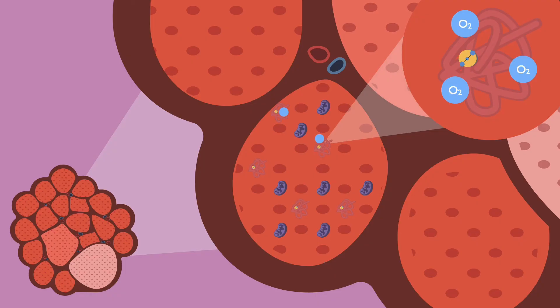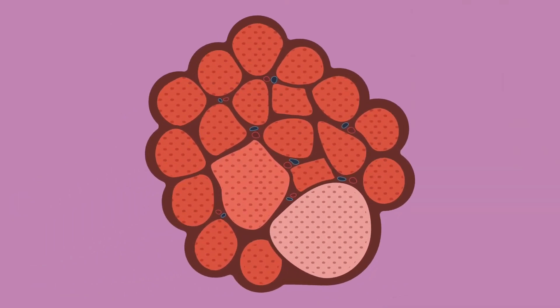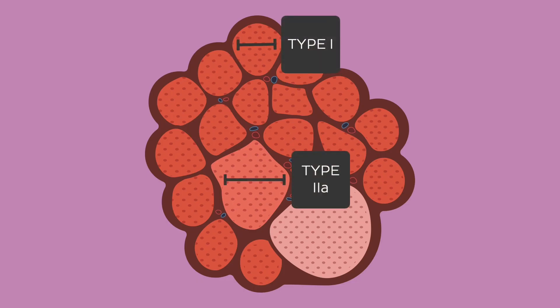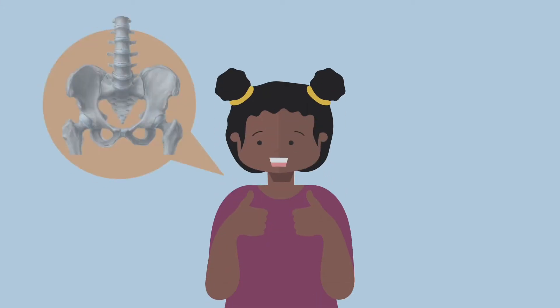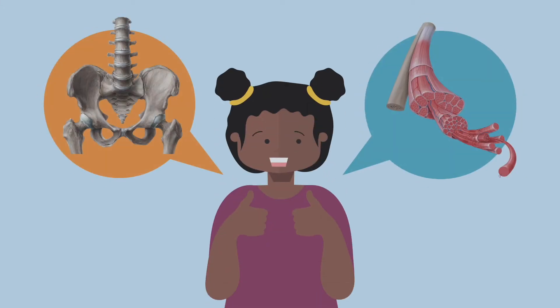All that myoglobin gives these fibre types a reddish colour in fresh specimens. Type 1 fibres also have a small diameter, which doesn't make them ideal for generating high levels of tension.